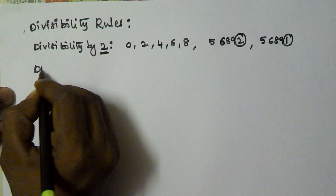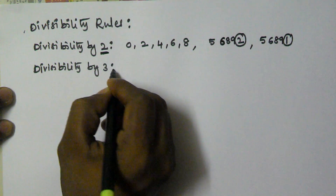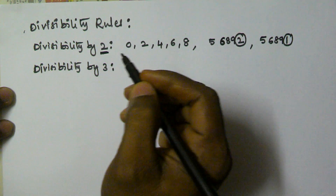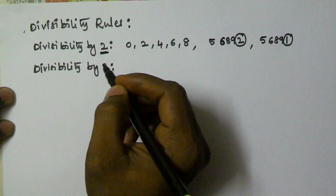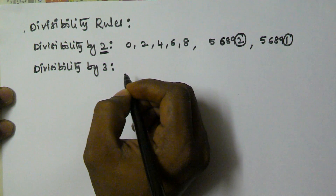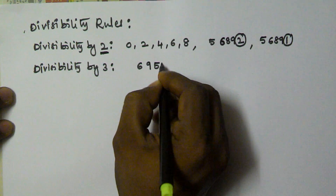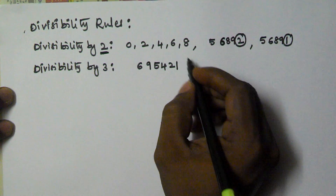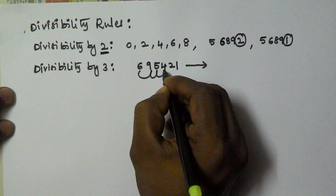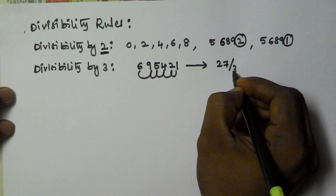Now we will see the divisibility by 3. A number is divisible by 3 only when the sum of its digits is divisible by 3. For example, consider 695421. The sum of digits is: 6 plus 9 is 15, plus 5 is 20, plus 4 is 24, plus 2 is 26, plus 1 is 27.